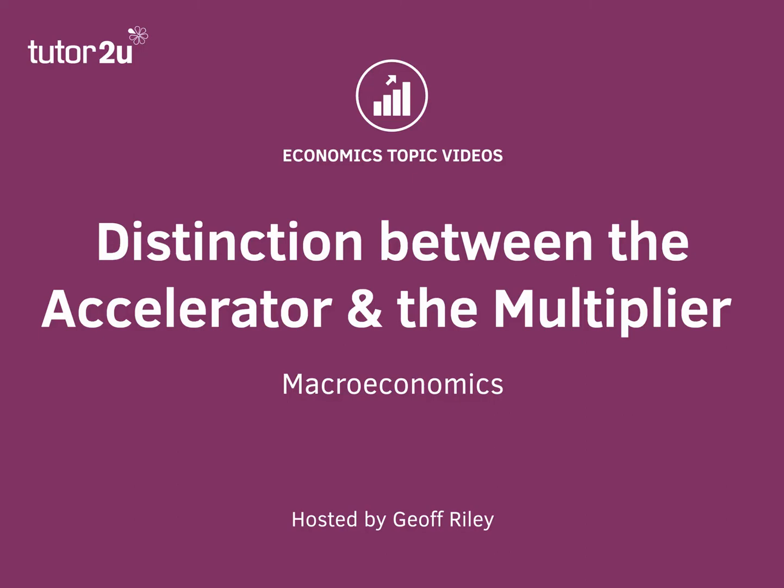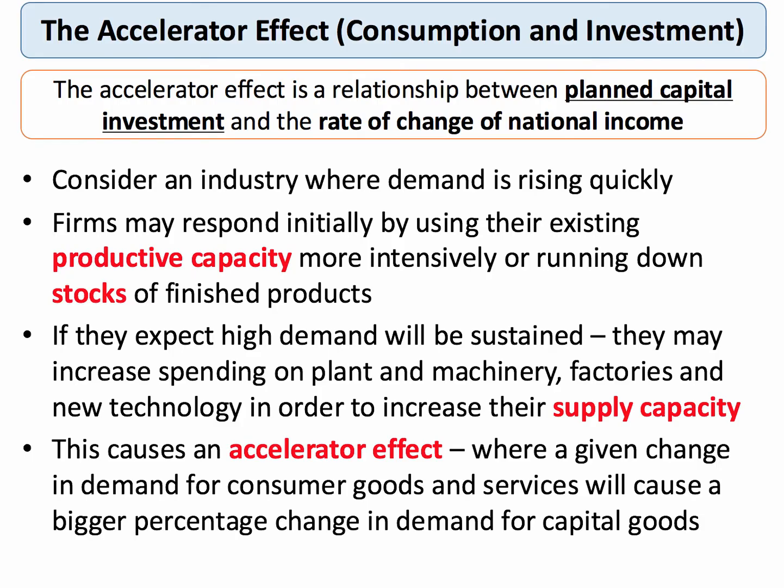Here's a short topic video to explain the distinction between the accelerator effect and the multiplier effect. The accelerator effect is the link between consumption and investment — in other words, it's the relationship between the rate of growth of national income or GDP and planned capital spending by businesses.